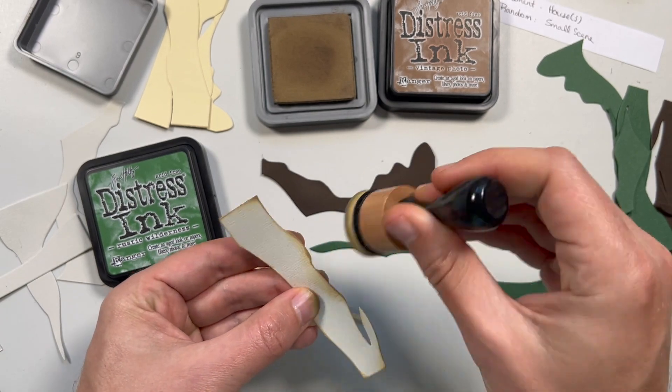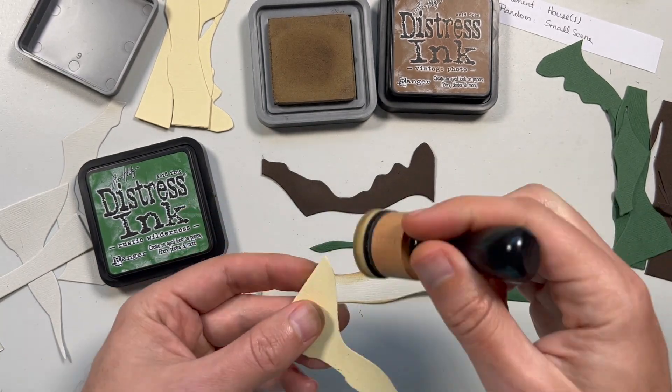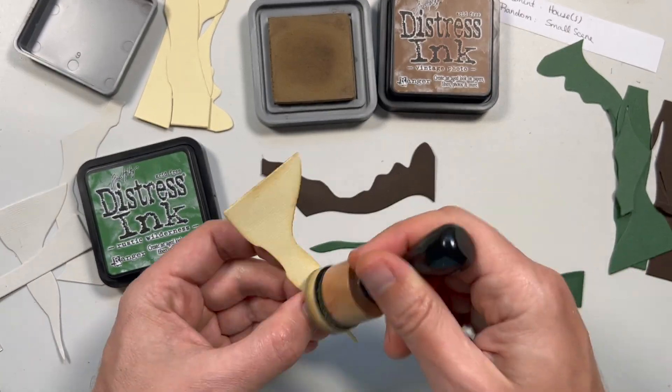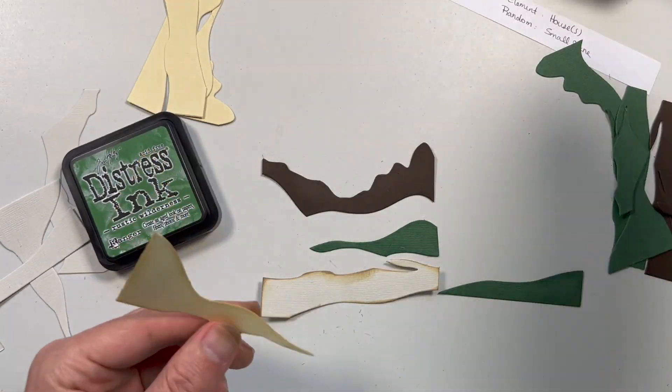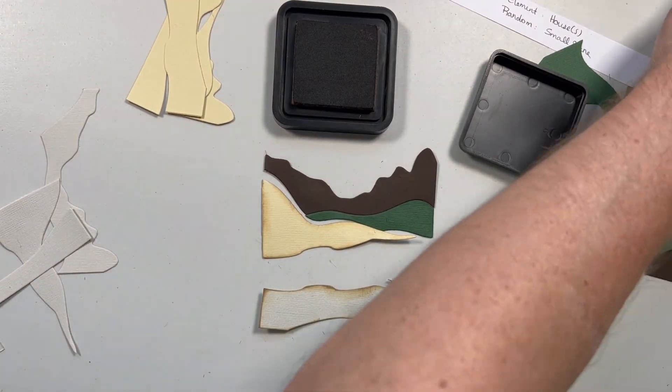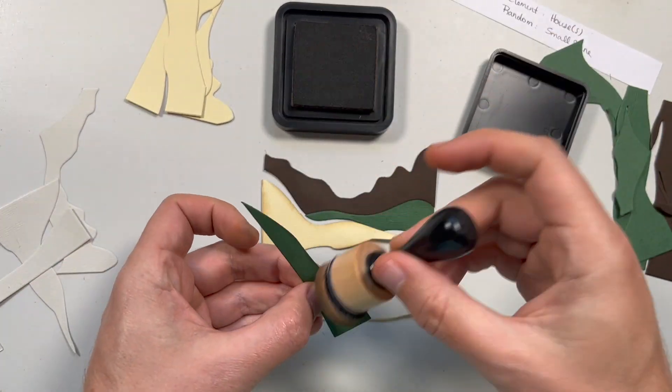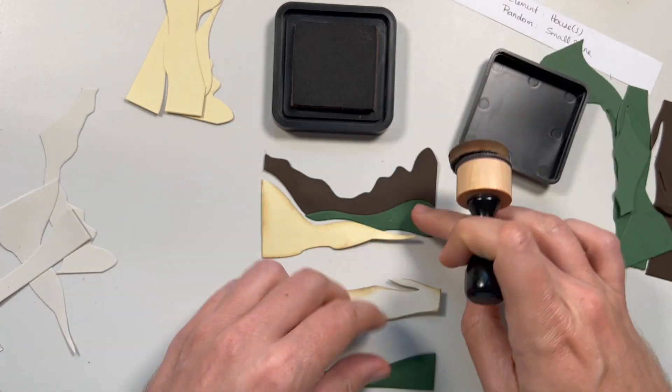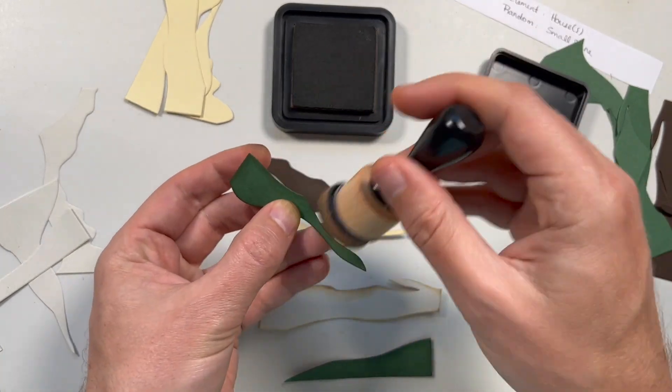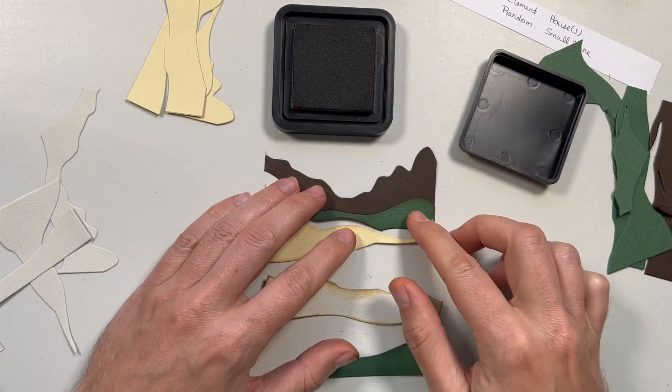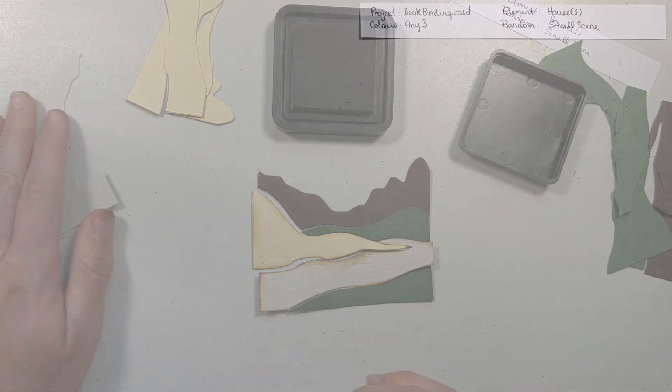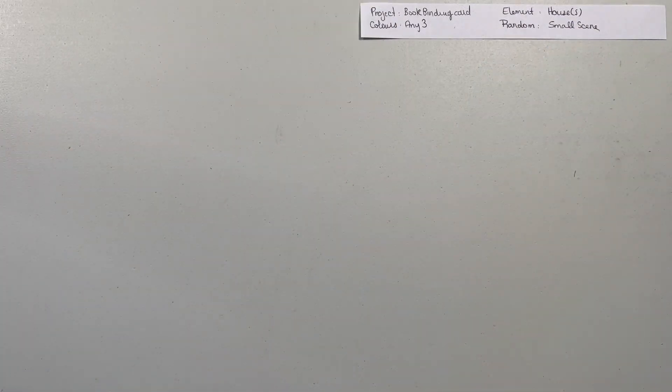The other elements while this is happening is it needs to be a small scene and it needs to contain a house or houses. So I'm going to do the small scene and houses as a bundle. I'm going to knock those two off at the same time. To finish it off, I'm going to use the vintage photo on the green. The rustic wilderness just wasn't dark enough. You couldn't really see it. I wanted to be a little more dark since all the other ones have a really defined brown shading.